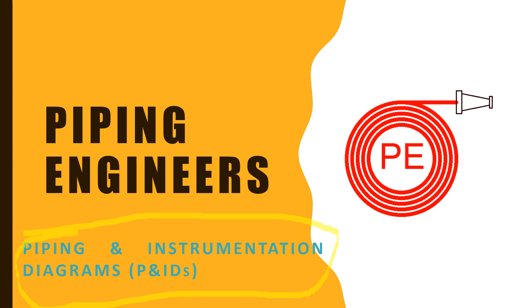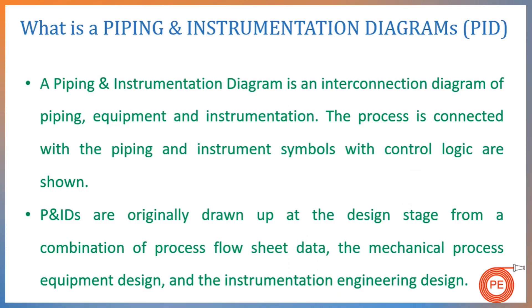So let's begin. What is a piping and instrumentation diagram? A P&ID is a general thing that a process engineer hears day in, day out. He needs to know what a piping instrumentation diagram looks like, what are the various things that are captured in a piping instrumentation diagram, and how to prepare that piping instrumentation diagram.